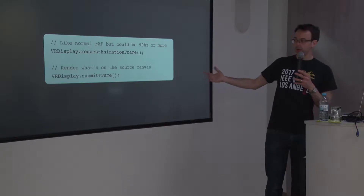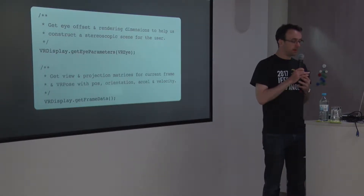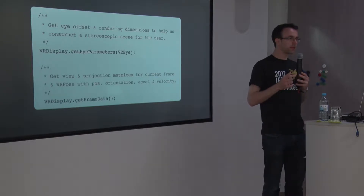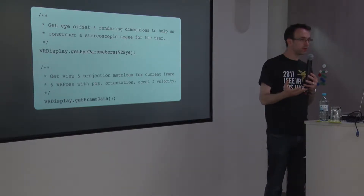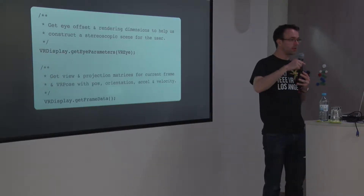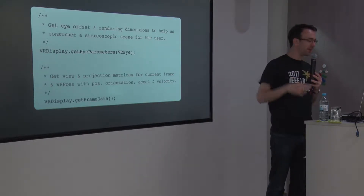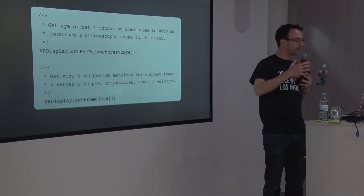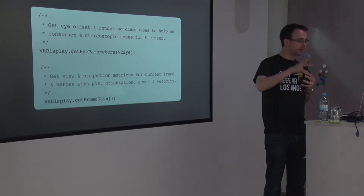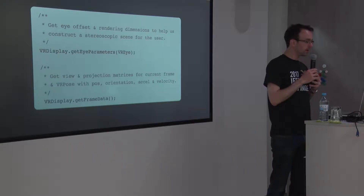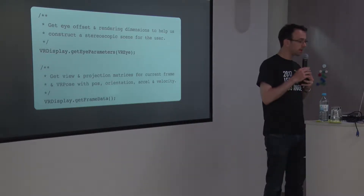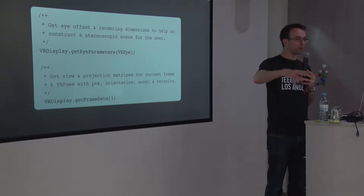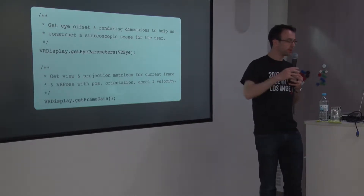When you're ready to submit each frame — each advance of the animation — you call submitFrame on the VR display. WebVR also gives you the eye parameters: for the particular headset and user configuration, it gives you the offset for your eyes, the distance between them, and the dimensions to render for this display. This lets you construct the right stereoscopic scene for whatever device it is. You can also get the frame data — the orientation and position data from the accelerometer.